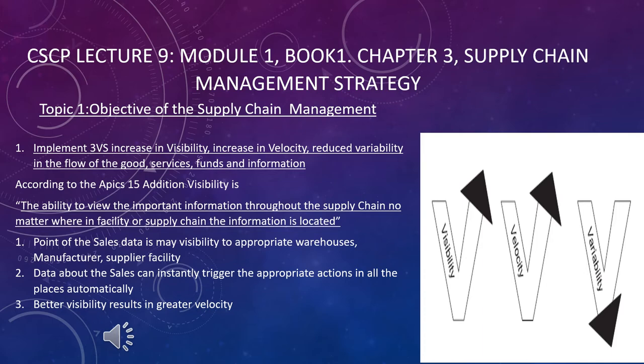Let's discuss the first objective in detail. Regarding visibility, according to APICS 15th edition, visibility is defined as the ability to view important information throughout the supply chain no matter where in the facility or supply chain that information is located. Our objective is to increase this visibility.